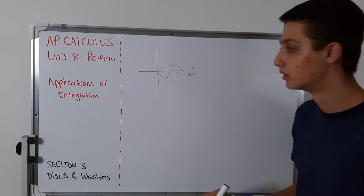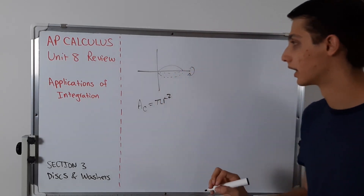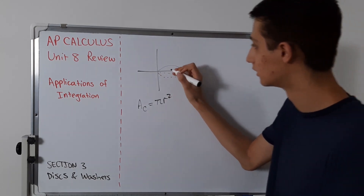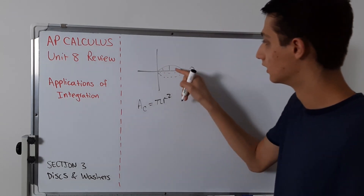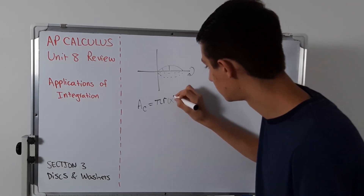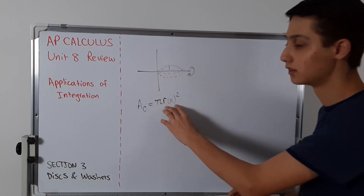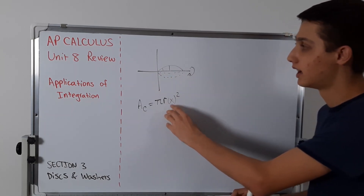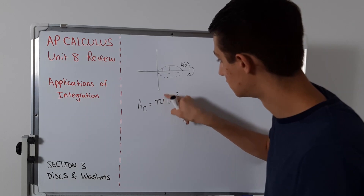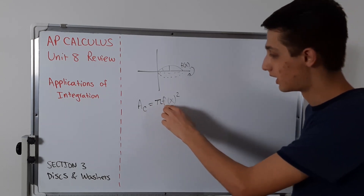We know the area of a circle is pi r squared. But the radius changes — it's smaller here and larger over there, so the radius is actually a function of x. Depending on where you are in that interval, the radius is going to be different. The radius is exactly whatever f(x) is. So the area of a circle for one cross section is pi times f(x) squared.